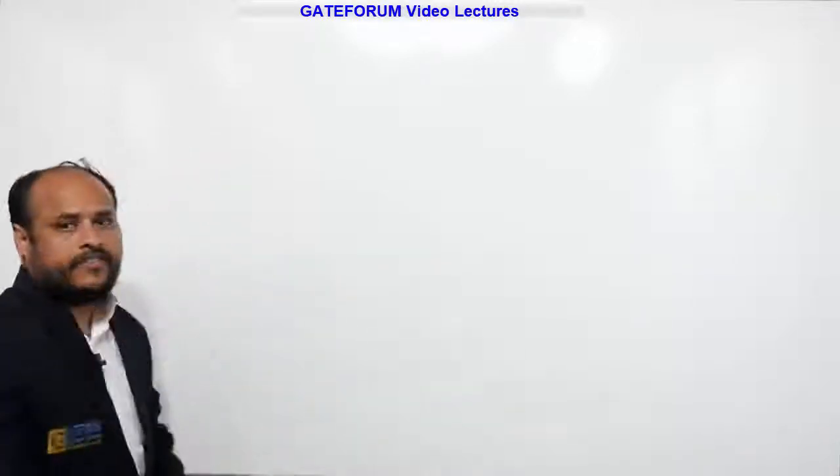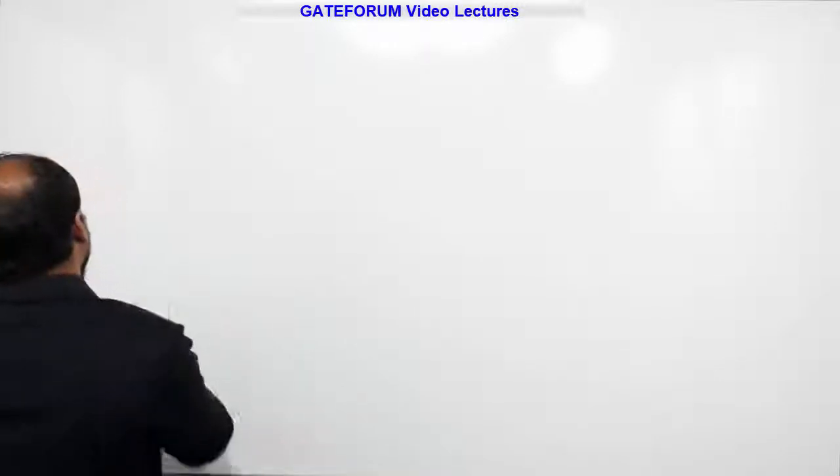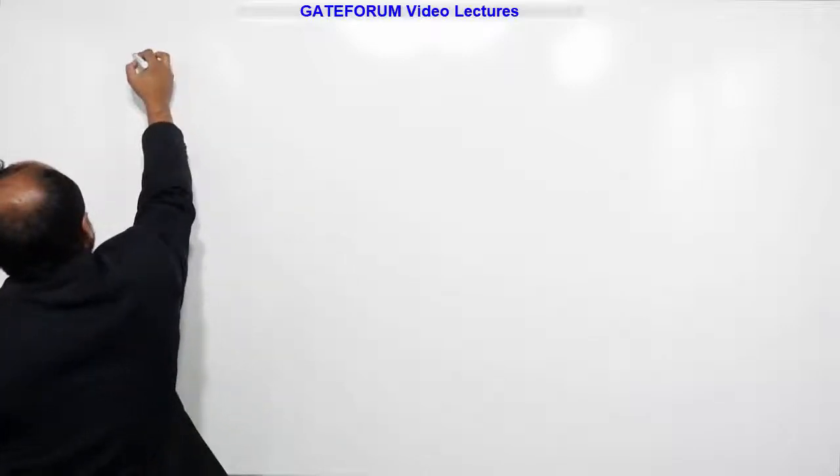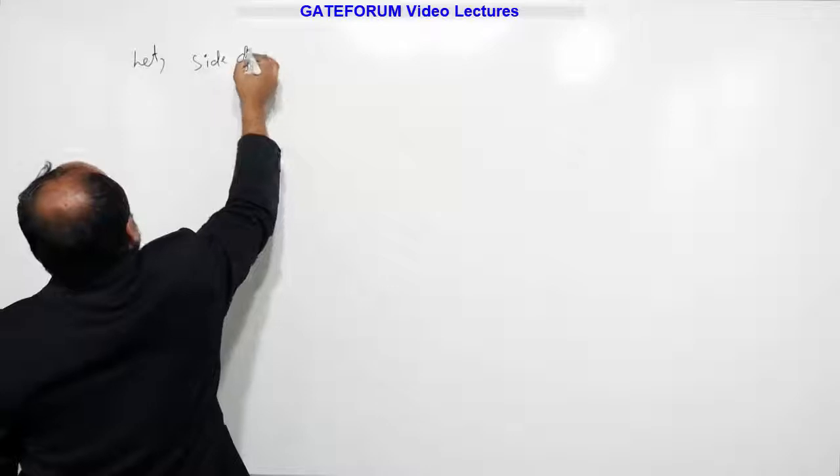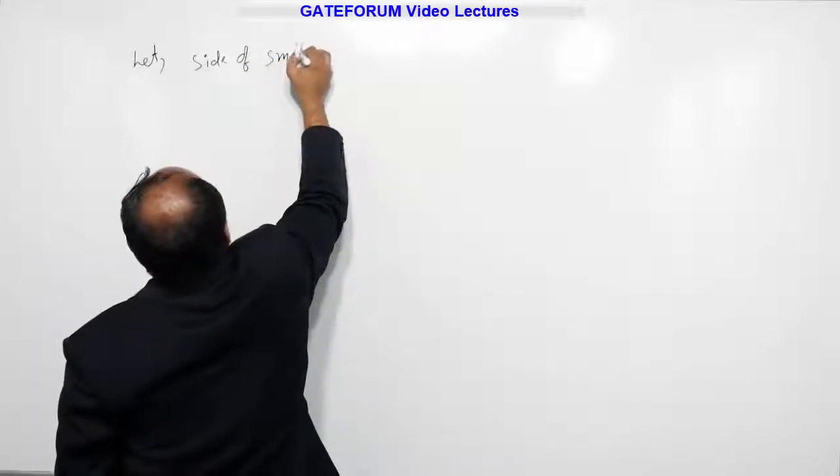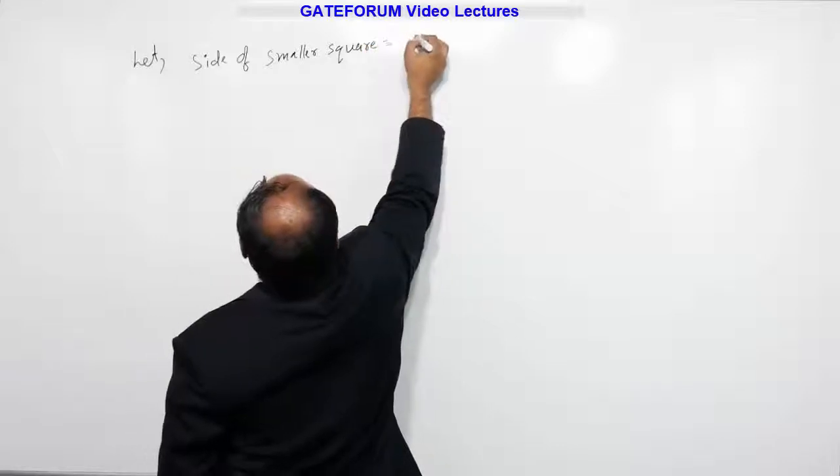So first I will write the given information here. A square has sides 5 centimeters smaller than the sides of a second square. From the information, let me assume side of smaller square I will take some x centimeters.